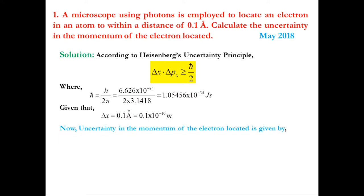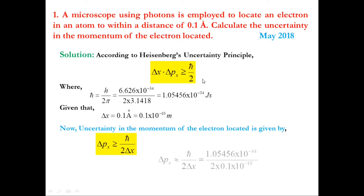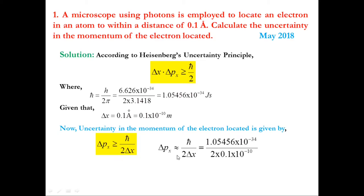The uncertainty in momentum is given by Δpx ≥ ħ/(2Δx), rearranged from Heisenberg's uncertainty principle. Choosing the nearly-equal form, Δpx ≈ ħ/(2Δx). Substituting the values of ħ and Δx, we get Δpx as 5.2728×10⁻²⁴ kg·m/s.